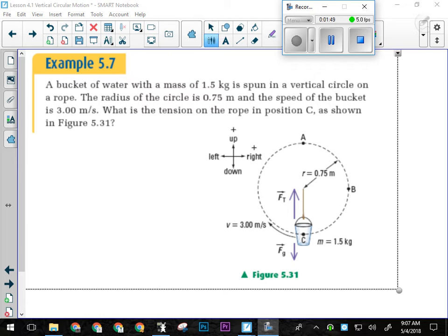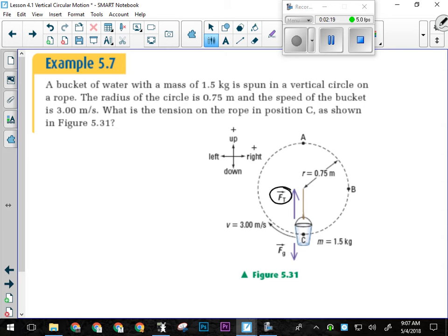So we got this bucket of water, and it has a mass of 1.5 kilograms. We're spinning it in a vertical circle, and the radius of the circle is 0.75 meters. The speed of the bucket is 3 meters per second. What's the tension of the rope in position C? This is where the most pressure is on that rope, because that's where gravity is pulling out. Inertia is working against you. It's where you have to pull the hardest. It's where the handle broke when I did this.